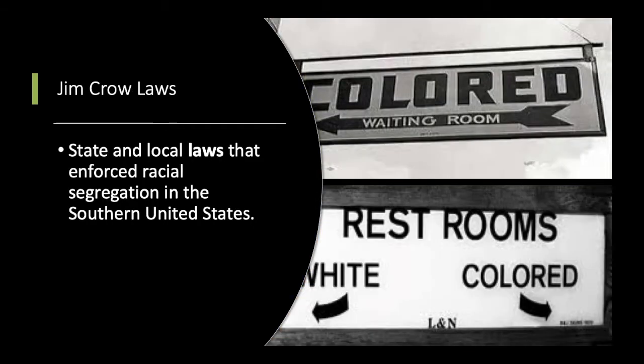Next is Jim Crow laws. This is a state and local law that enforced racial segregation in the southern United States. With Jim Crow laws, there's going to be a different spot for colored people and white people — most of the time referring to Black or African Americans. These Jim Crow laws were separate but equal, so everybody had access to a water fountain, but there was a white water fountain and a colored water fountain, segregating everybody by race.